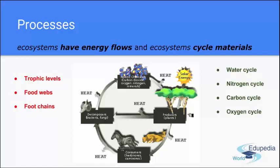Then there are cycles of materials — water, hydrogen, oxygen, and others — which will be covered in more detail in the next presentations. These are cycles of materials whose total amounts are strictly defined on Earth. The levels of energy flow depend on the input of solar energy sent to Earth. That is all for today — thanks for listening, and see you in the next presentation.